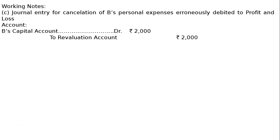The first working note is the journal entry for cancellation of B's personal expenses erroneously debited to profit and loss account. A sum of Rs.2000 was paid for B's private expenses and debited in the profit and loss account. Due to this, the profit and loss is reduced. Hence, we have to increase the profit by crediting the revaluation account — journal entry: B's capital account debited to revaluation account.